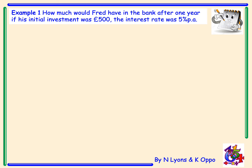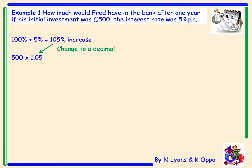Example 1. How much would Fred have in the bank after one year if his initial investment was £500 and the interest rate was 5% per annum? You have seen questions like this at National 5 and you would use compound interest to solve it. Looking at the percentage in the bank after one year, we would start with 100% and add on 5%, which would equal 105%. We would then find 105% of £500, changing 105% to decimal form. 500 times 1.05 equals £525. This is how you would answer the question at National 5.